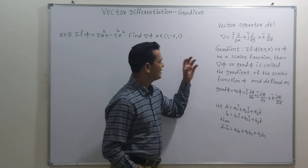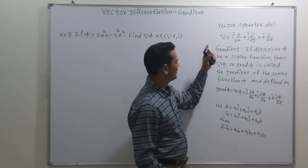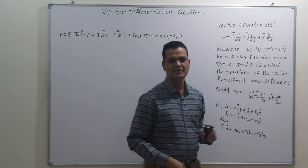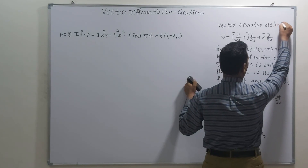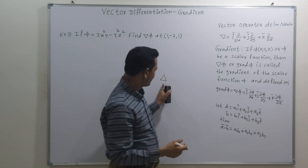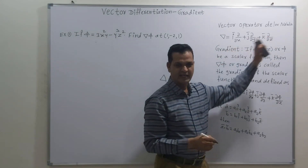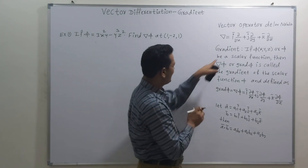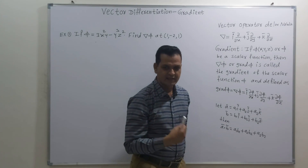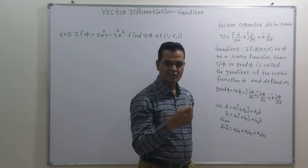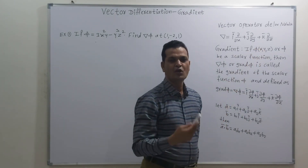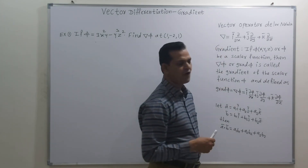Let me first introduce the operator called the vector operator, which is called Del — or some people call it the vector differential operator. We can pronounce this as Del, or some people also call it Nabla. This operator Delta, also called Del, is defined as i times the partial derivative with respect to x, plus j times the partial derivative with respect to y, plus k times the partial derivative with respect to z. Here i, j, k denote the unit vectors corresponding to the x, y, and z axes. This is called the vector operator Del or Nabla.